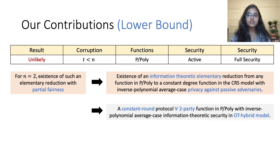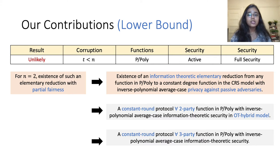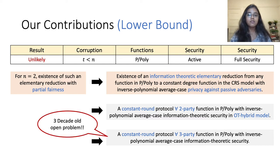For instance, existence of such an information-theoretic elementary reduction implies existence of a constant-round protocol for efficiently computable functions with inverse polynomial average-case information-theoretic security in the OT hybrid model. This in turn implies a constant-round protocol for all three-party efficiently computable functions with inverse polynomial average-case information-theoretic security. While the original question is with respect to standard security, the relaxation to inverse polynomial average-case security does not seem to make it any more tractable.